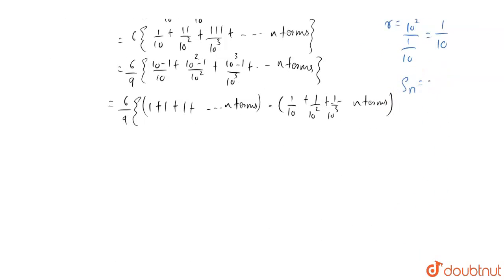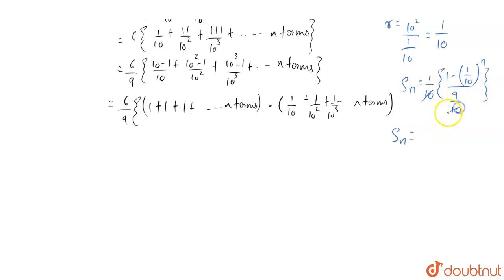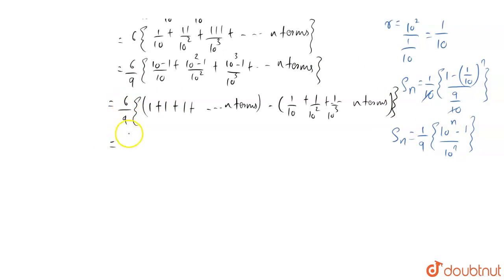The sum of GP will be Sn. The first term is 1 by 10, into 1 minus 1 by 10 to the power N. Here 1 minus 1 by 10 will be 9 by 10. Now here we can simplify it further. S of N will be: 10 and 10 gets cancelled out and we are left with 1 by 9 into 10 to the power N minus 1 upon 10 to the power N. So this sums up to: 6 by 9 can be written as 2 by 3, into N minus 1 by 9 into 10 to the power N minus 1 upon 10 to the power N. So this is the final answer.